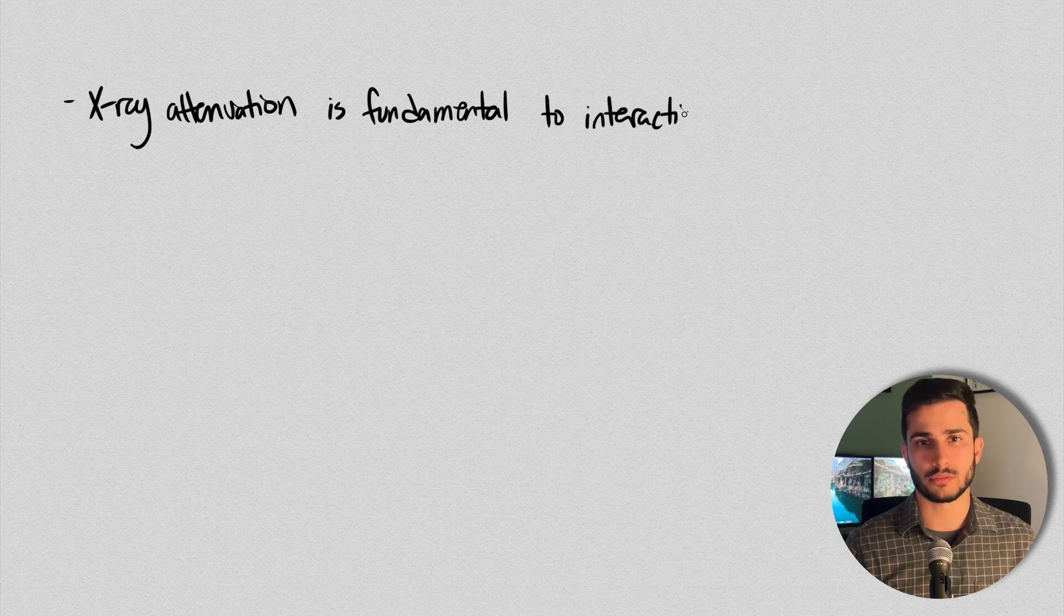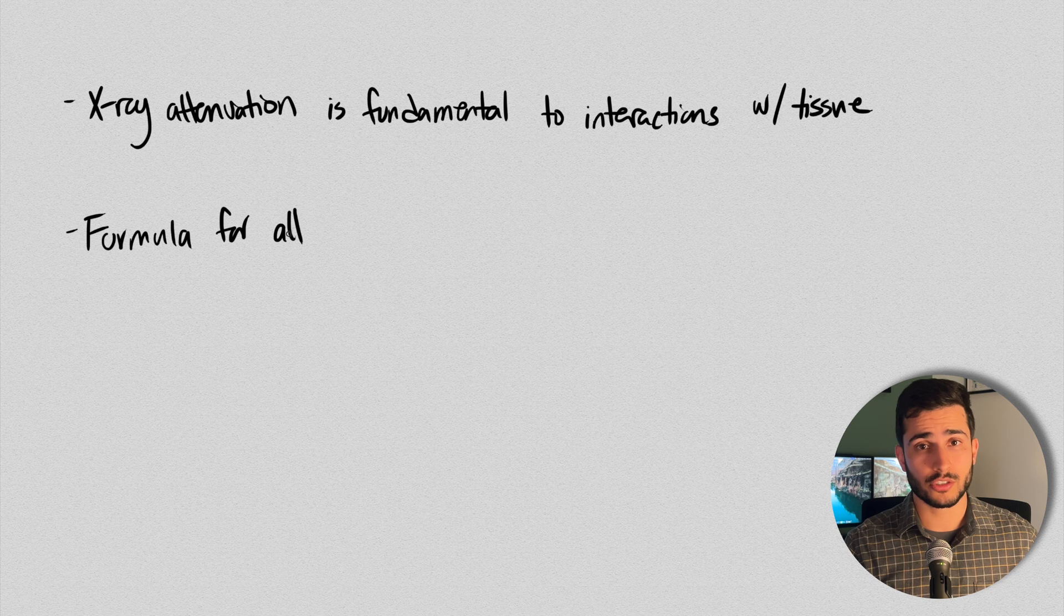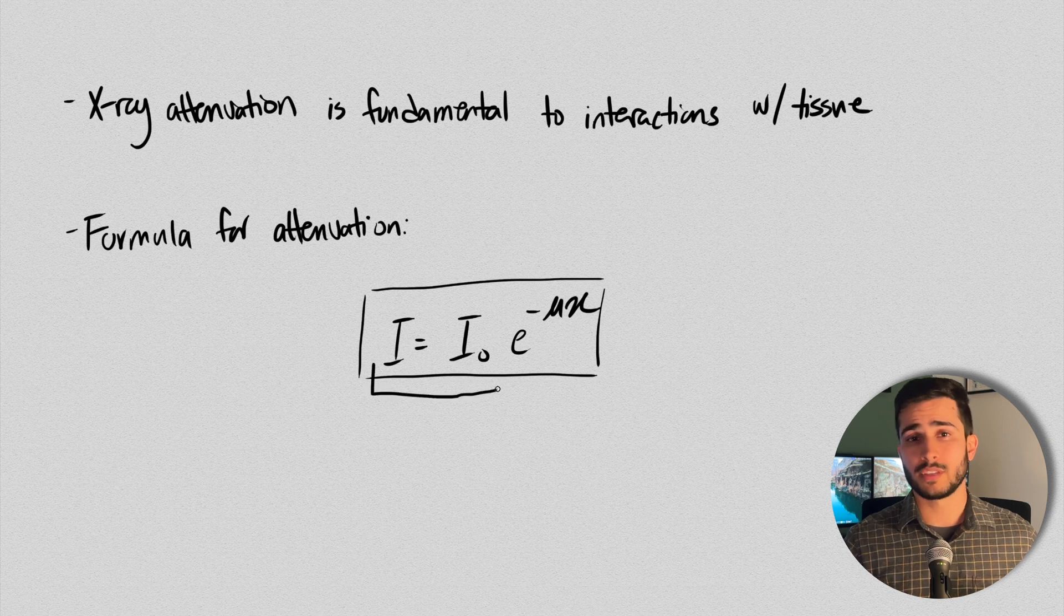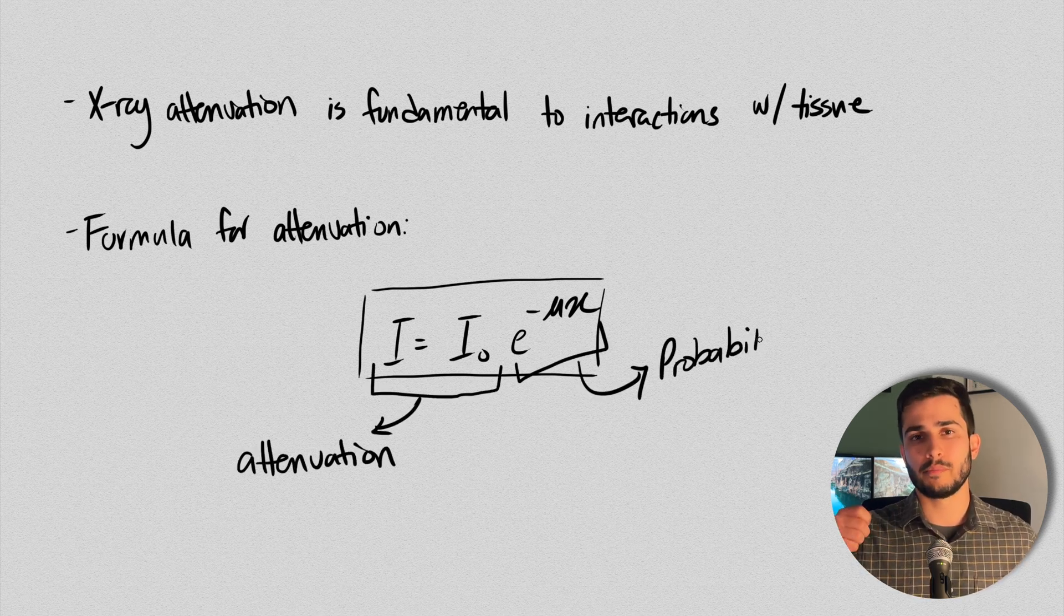Let's quickly recap what we've learned. Hopefully now you see that the concept of X-ray attenuation is fundamental to understanding how X-rays interact with different materials, including human tissues. We talked about the basic principles of attenuation, the relevant formulae, and how the different tissues in the body affect X-ray attenuation. So hopefully now by understanding these interactions and effects on different tissues, you now have a better appreciation for what goes on behind the scenes next time you take an X-ray.